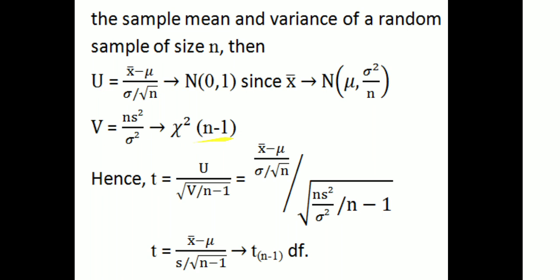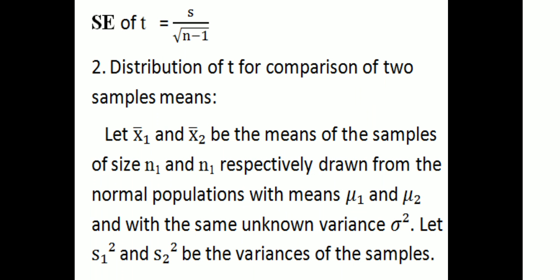Hence, t = u / √(v/(n-1)) = (x̄ - μ)/(σ/√n) divided by √(ns²/σ²/(n-1)), which simplifies to t = (x̄ - μ) / (s/√(n-1)), which follows the t-distribution with n-1 degrees of freedom. The standard error of the t-distribution is s/√(n-1).